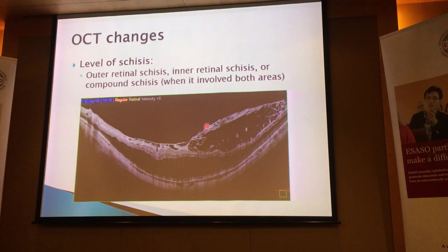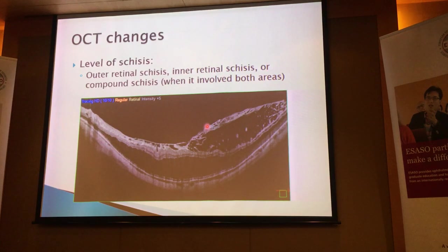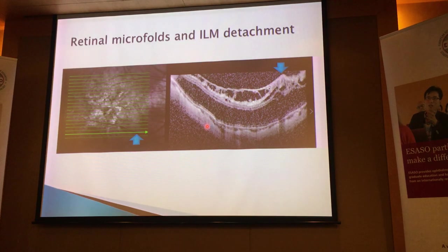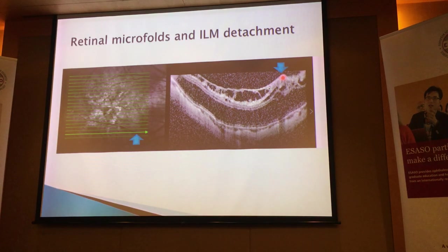When you have schisis that involves both the inner and outer retina, then it's called compound schisis. When you're reading an OCT, it's good to describe it in that manner. You can see here how the microfolds cause tenting of the retina at the edge of the posterior artery staphyloma, and how the internal limiting membrane is actually lifted off.